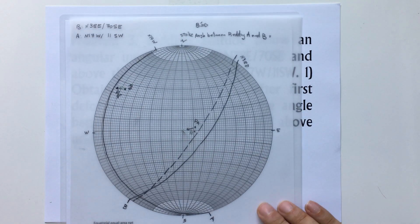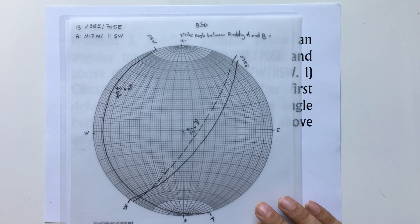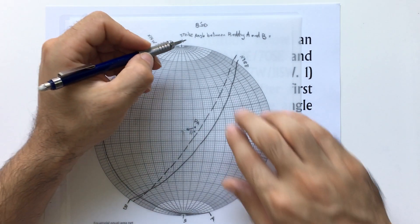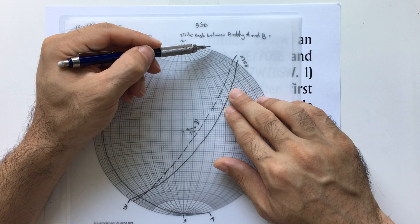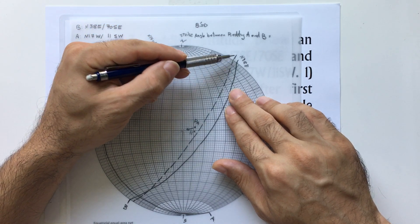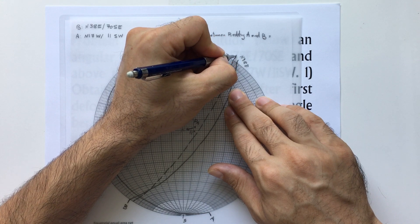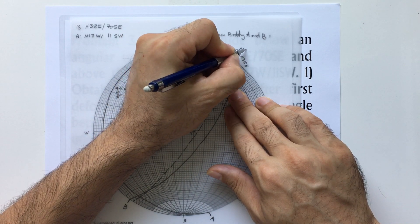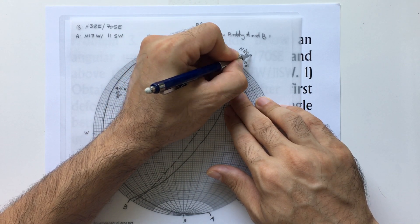So I have the trace, so I can read the strike and dip. The strike is 10, 20, 30, 32, 34, 35. So this is north 35 east.